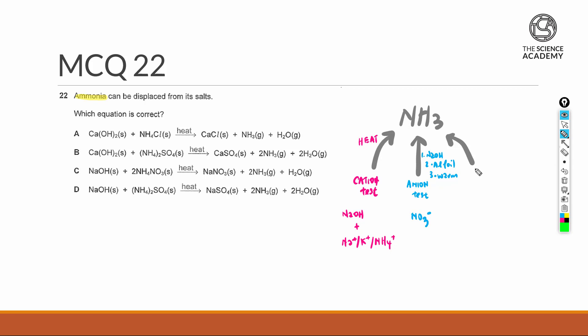The last and most common one is under the acid-base chapter, whereby if we have an ammonium salt plus an alkali, it will release ammonia gas as a byproduct, apart from salt and water.